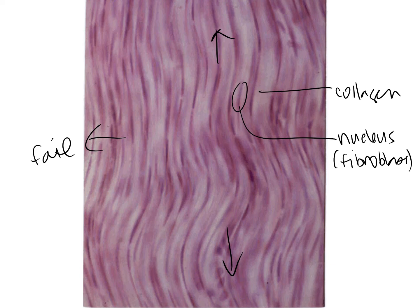Dense regular connective tissue forms tendons, which hold muscles to bone, and ligaments, which join bone to bone. An aponeurosis joins muscle to muscle or muscle to bone — a commonly known example is on the scalp, connecting the frontalis muscle over the forehead to the occipitalis muscle on the back of the head. The directional fiber arrangement provides strength only along one axis.